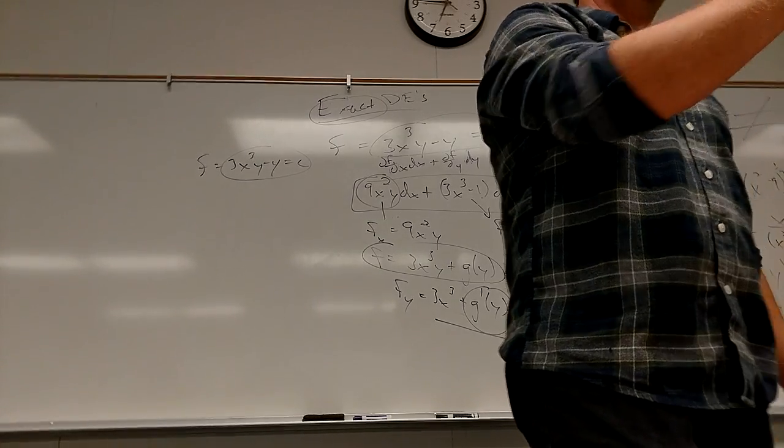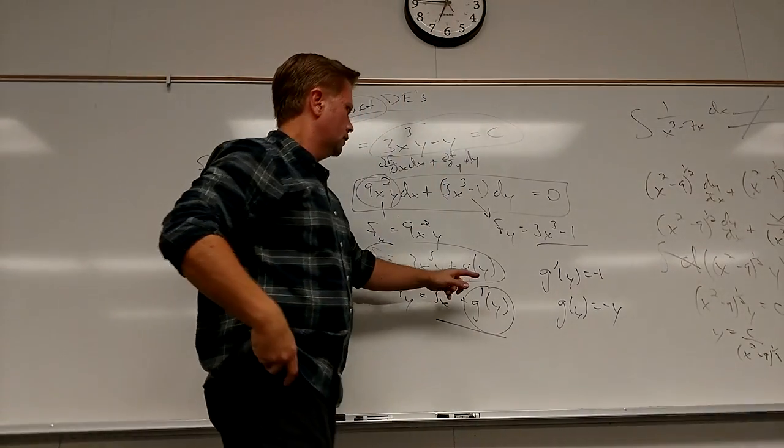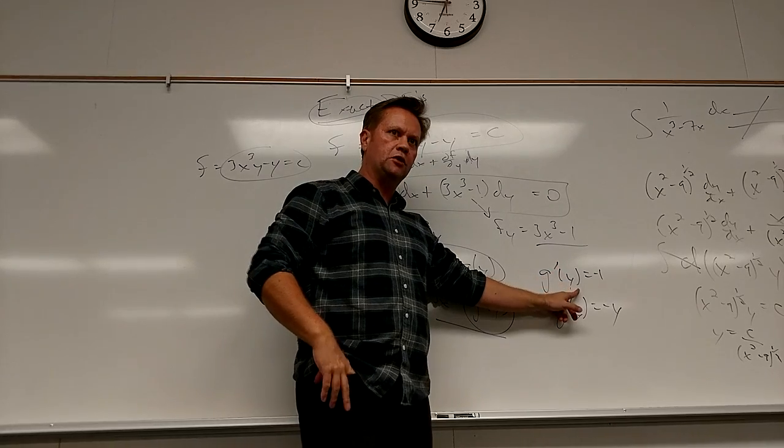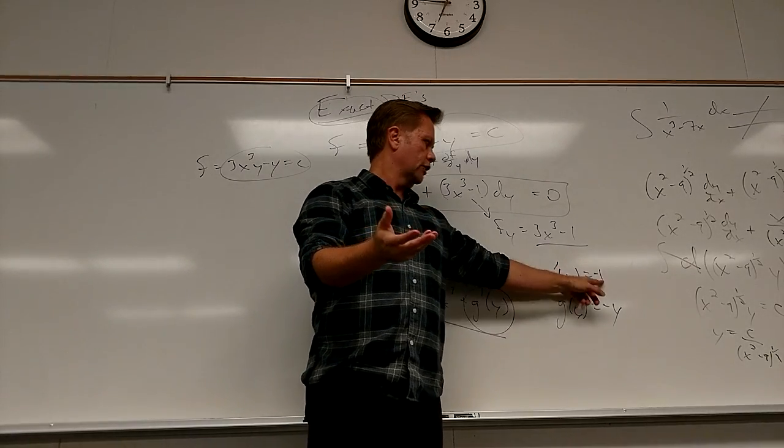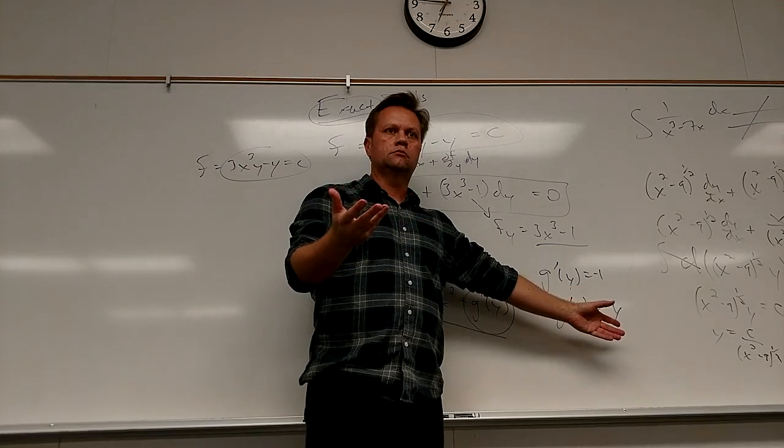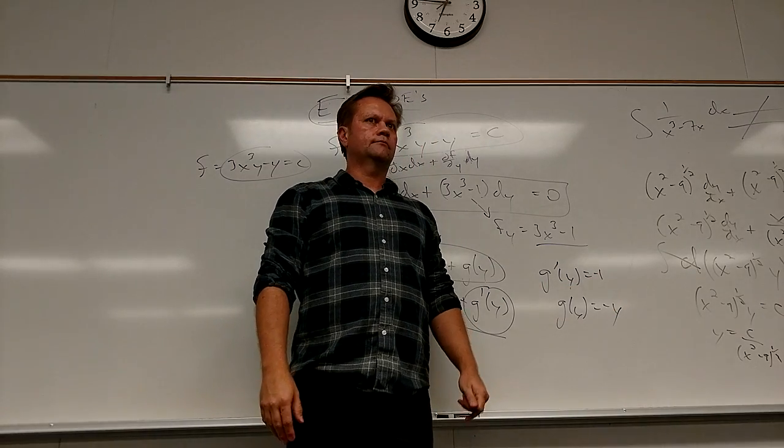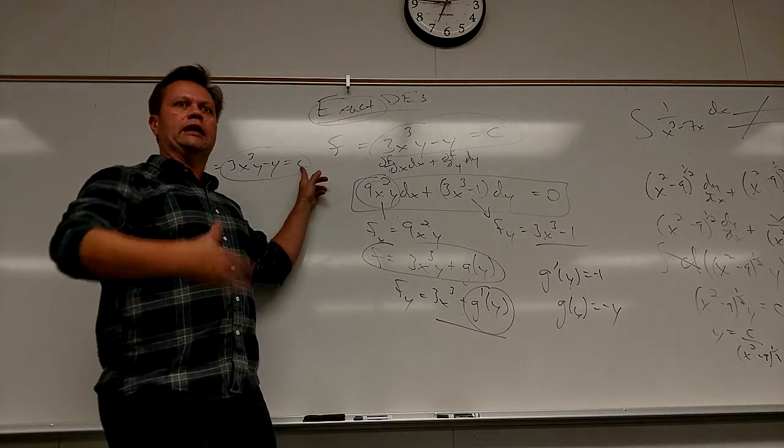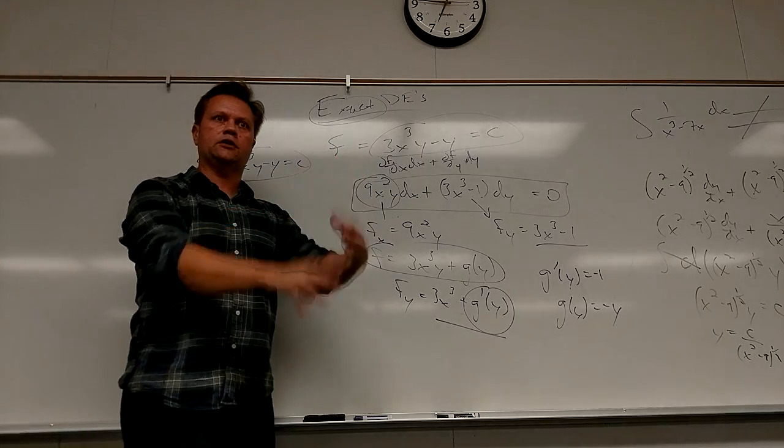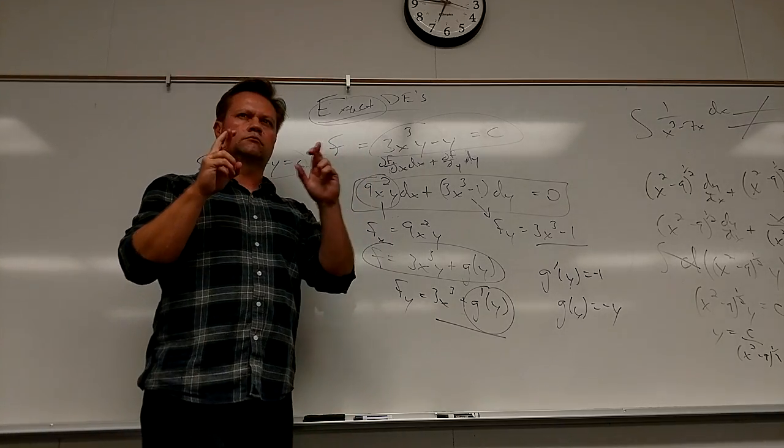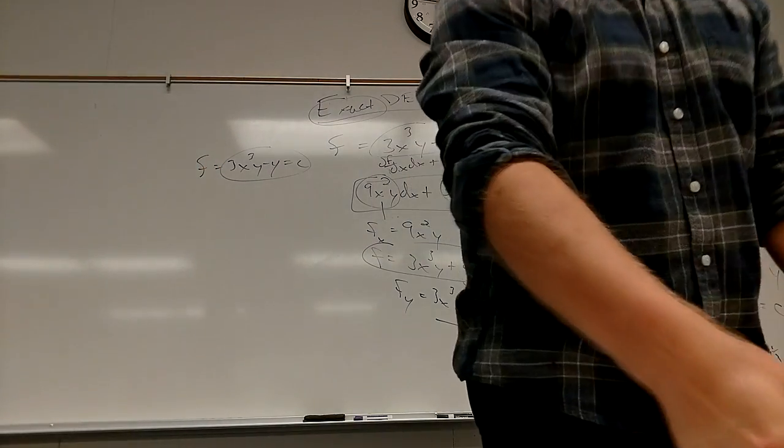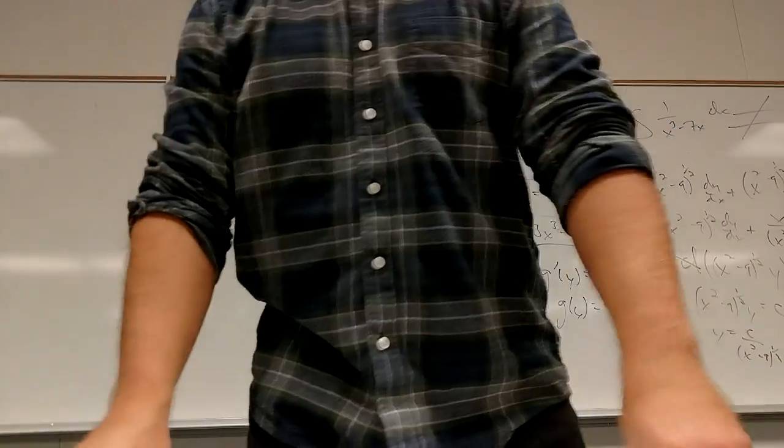So what is my F function? 3X cubed Y minus Y equals a constant, which is what we started with. We took it, tore it apart in the differentials, and then put it all back together. You're going to start here, check to make sure it's exact, and then start with whichever one looks better. How did you get G of Y equals negative Y? G prime of Y is negative one, so you integrate it. That's negative Y. This can also turn into an initial value problem on a second step.